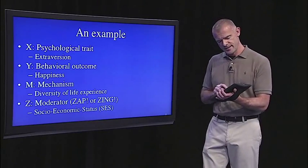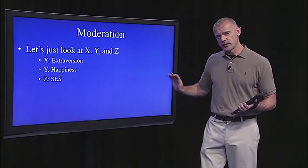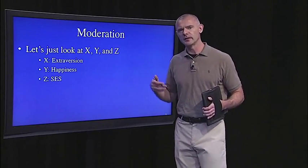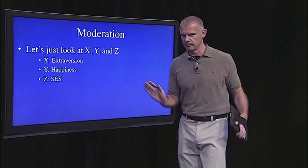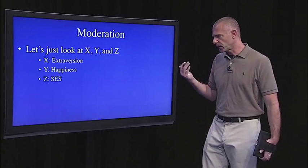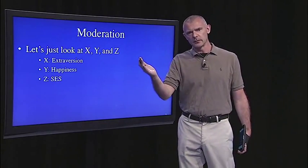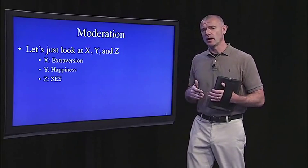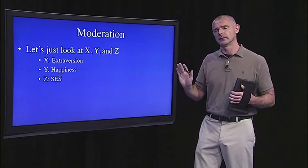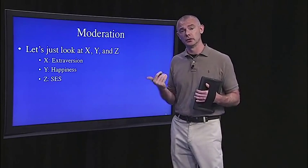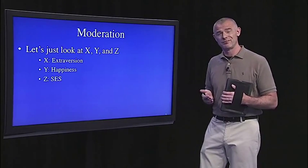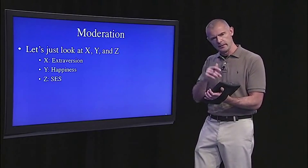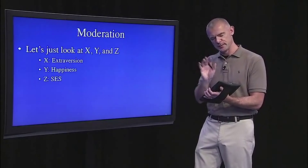Now let's introduce a moderator variable, a sort of Debbie Downer in this example. So we're just gonna look at extraversion and happiness. And a moderator, let's add in socioeconomic status. So where I'm going with this example, and I just made this up, I'm not saying this is true, but it's possible. Perhaps that positive relationship we saw between extraversion, diversity of life experience and happiness, maybe that's only true for people on the higher end of the spectrum in socioeconomic status. Perhaps the picture completely flips if you're low on socioeconomic status. Because perhaps your diversity of life experiences might not be so great.